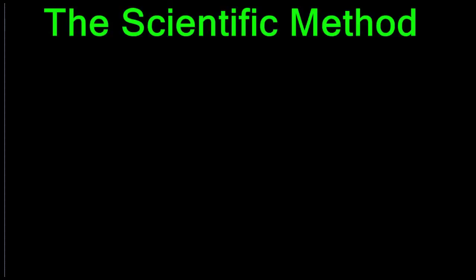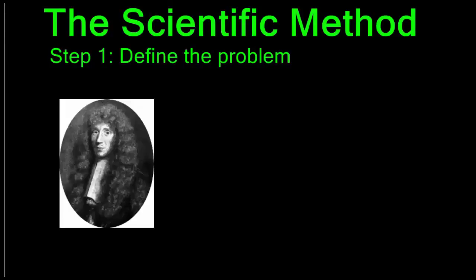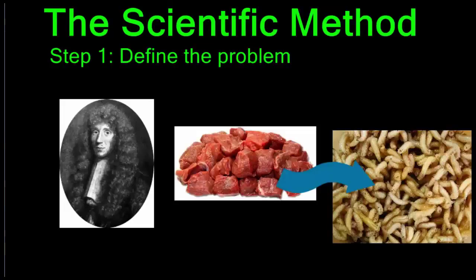The scientific method is a logical step-by-step procedure for solving a problem. There are a number of specific steps that need to be followed in order to execute the scientific method properly. Step one involves defining the problem — in this case you would ask a very specific question that would guide your experimentation so that you can find an answer. As an example, we will use the work of Francesco Redi, an Italian scientist who lived in the 1600s.